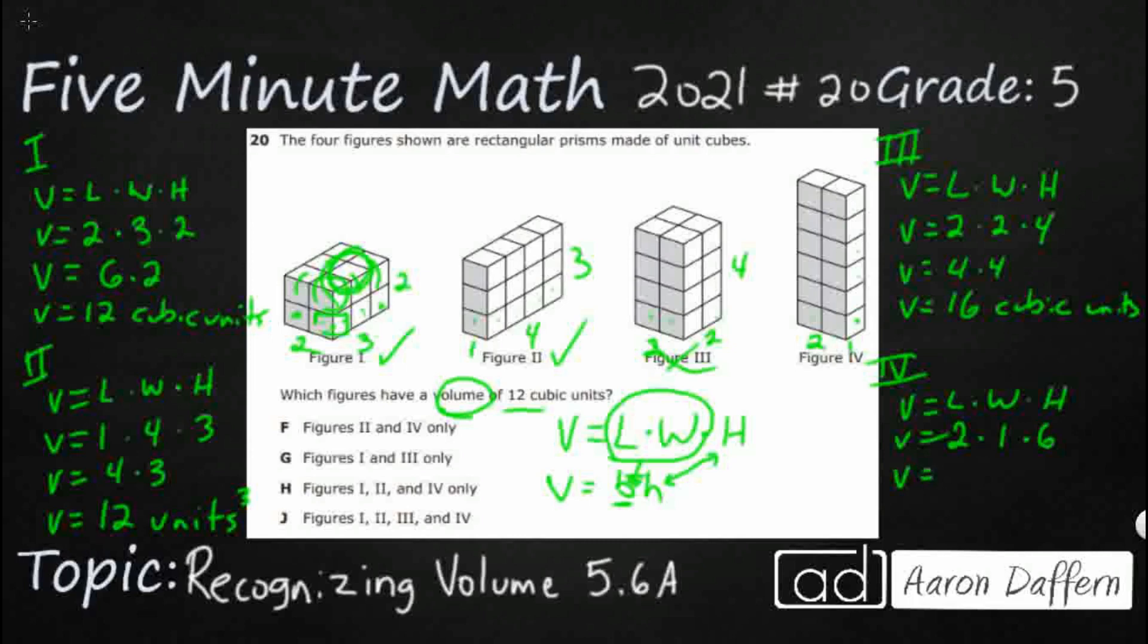So volume equals that. 2 times 1, let's make that 2 times 6. And look at that. That makes 12 cubic units. That's also going to work. So I've got 1, 2, and 4. My answer is H.